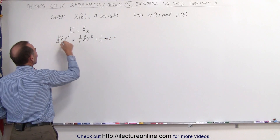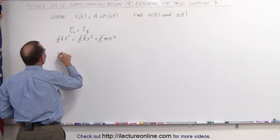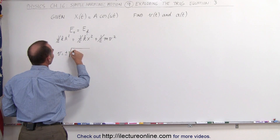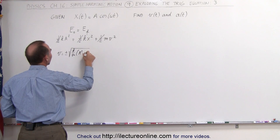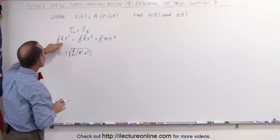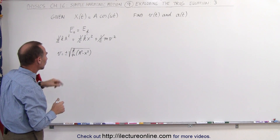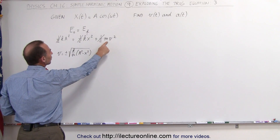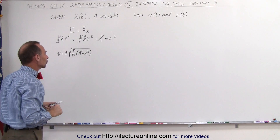First of all, we can get rid of the ½'s, and then if we solve this equation for v, we can show that v is equal to plus or minus the square root of k divided by m, times A squared minus x squared. If you don't remember how to do that, we show you how in a few videos ago in this series. Algebraically, we move the kx² to the other side, divide both sides by m, take the square root, and you end up with this equation.